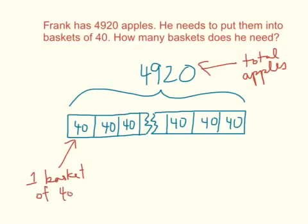Now whenever I'm grouping things or splitting things up evenly, that tells me I'm doing a division problem. So what I want to do here is I want to do 4,920 divided by 40.